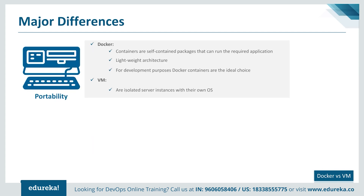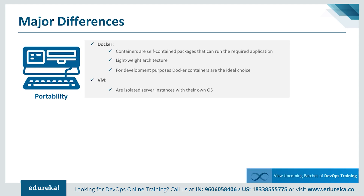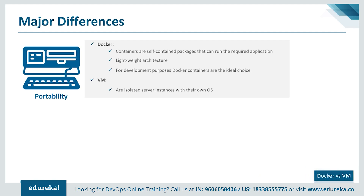Regarding portability: Docker containers are self-contained packages that do not have a separate guest operating system, making them easily portable across different platforms. Containers can be started and stopped in a matter of seconds, and their lightweight architecture makes deployment quick. Virtual machines, on the other hand, are isolated server instances with their own OS and cannot be ported across multiple platforms without compatibility issues. For development purposes where applications need to run on different platforms, Docker containers are the ideal choice.